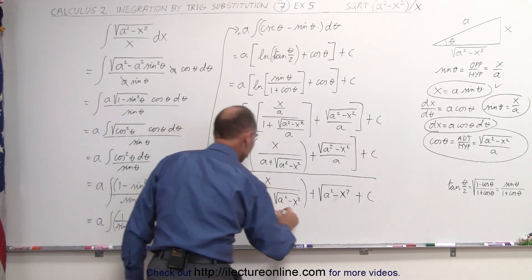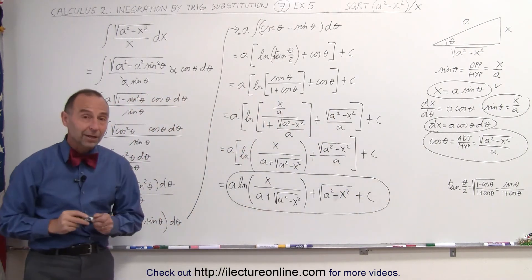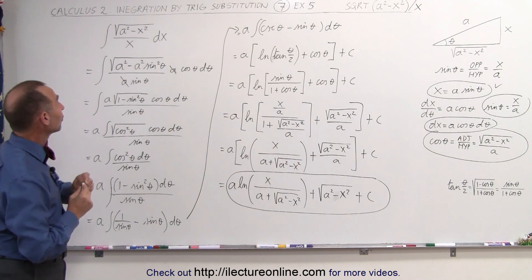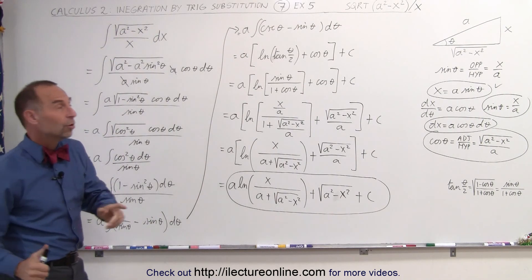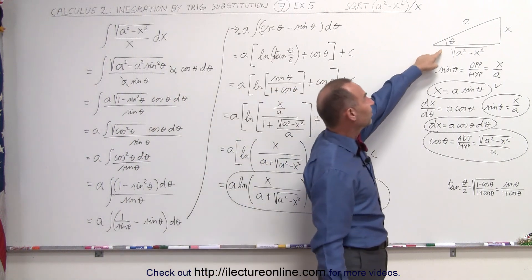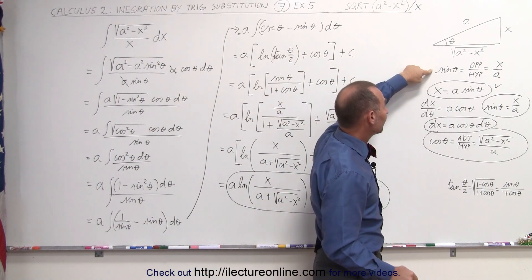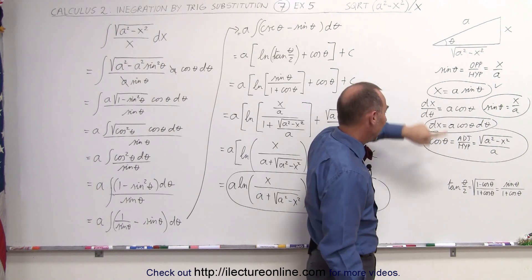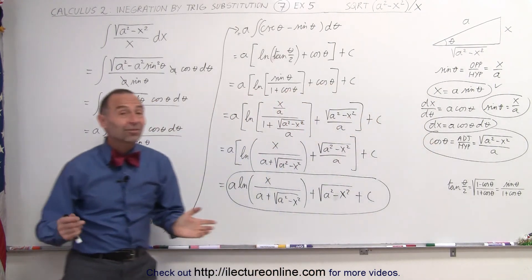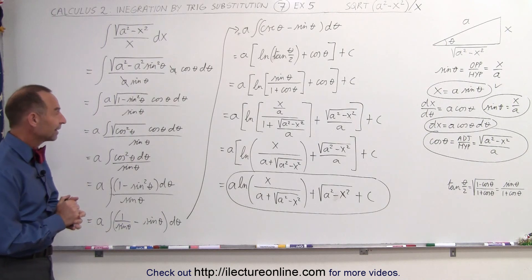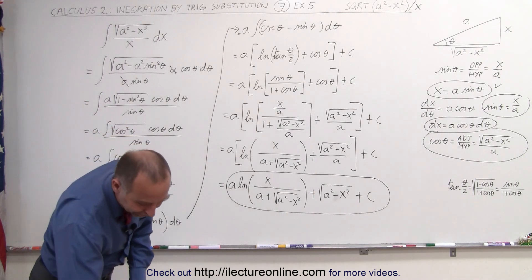And I believe that would be the proper final answer for that particular integral. Again, it comes down to recognizing that we have an a squared minus x squared inside the radical, which lends itself to using this kind of triangle relationship — substituting x as a sine expression and the adjacent side as a cosine expression. And that's how we solve an integral like this. Thank you.